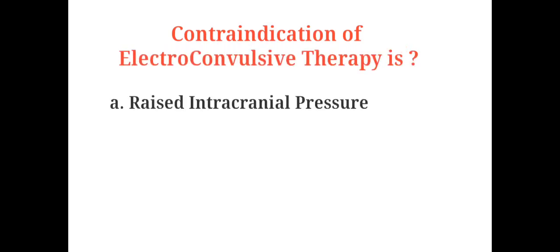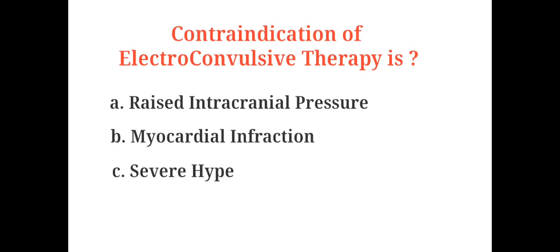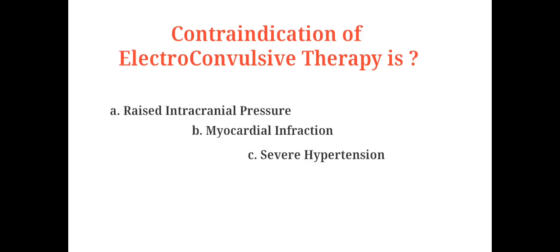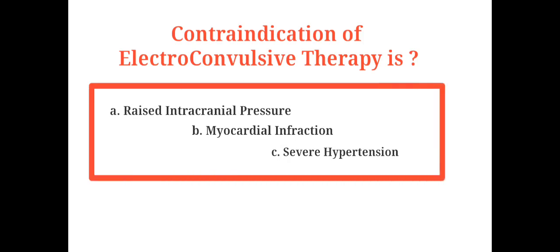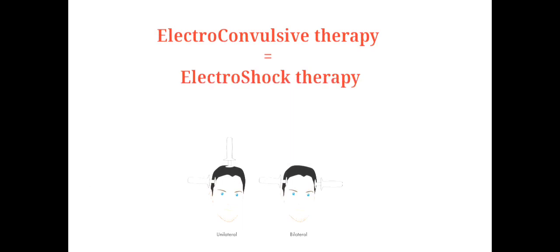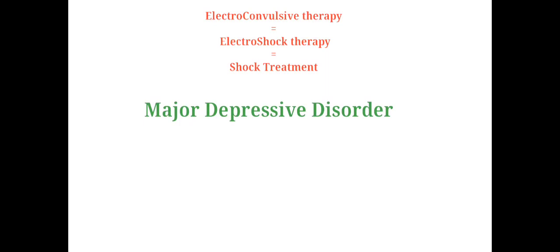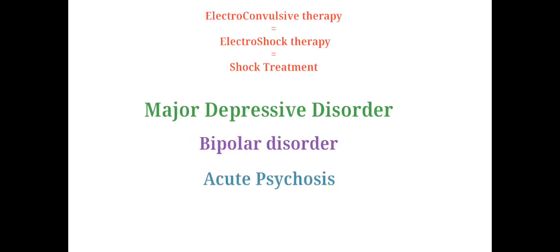Contraindications of electroconvulsive therapy include: A. Raised intracranial pressure, B. Myocardial infarction, C. Severe hypertension, D. All. Electroconvulsive therapy is given to provide relief from mental disorders such as major depressive disorder, bipolar disorder, acute psychosis and catatonia.